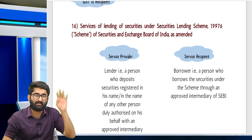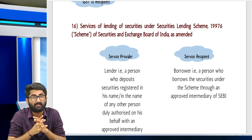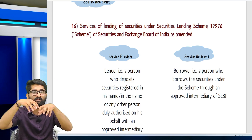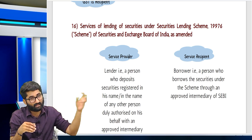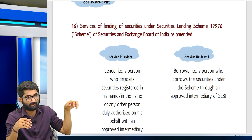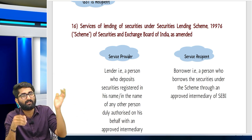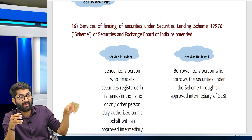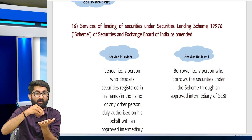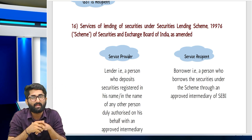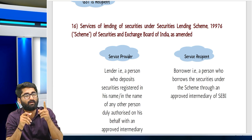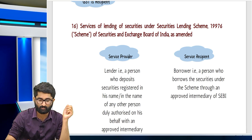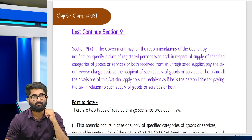Entry 16: Security lending services — under SEBI's scheme, a dealer takes securities from an investor and gives them to a borrower; the borrower sells and uses the money. Once the duration is done, the borrower repurchases the shares and returns them. The lender receives a fee for providing this service. The lender is the service provider and the borrower is the service recipient; the borrower has to pay under reverse charge mechanism. These are the 16 items discussed under section 9(3).